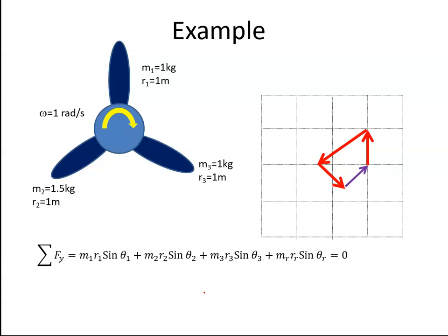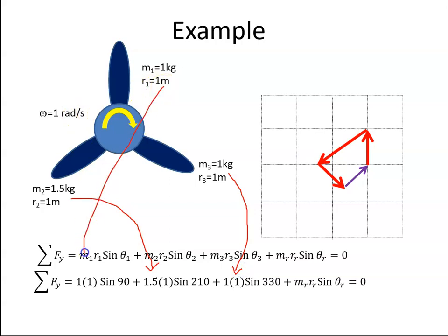Okay we do the same with the vertical forces, except we're using sine. So again, sine of 90, this would be the sine of 210, sine of 330, and it's M1R1 for here, M2R2 here, and M3R3 here. And this is our resultant. So when I add these three together, and bring the answer to that side, I find that MᵣRᵣ sin θᵣ is equal to 0.25.